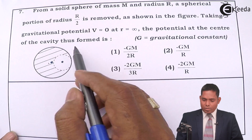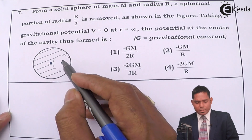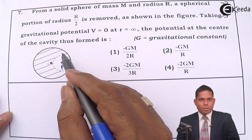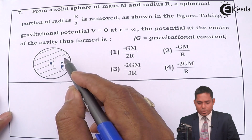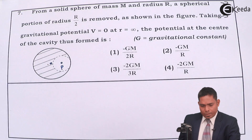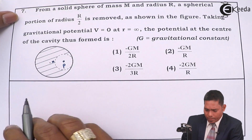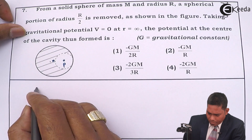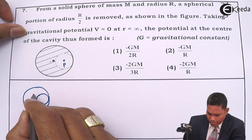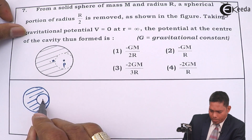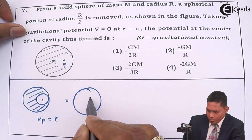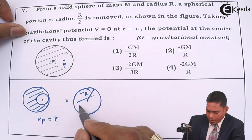So you have to find the gravitational potential at point P — the center of the cavity. Not for the whole sphere, but for the situation when the R/2 radius sphere is removed. This is an interesting question in gravitation. We will use superposition: consider the whole sphere of radius R, and from it, remove the small sphere.